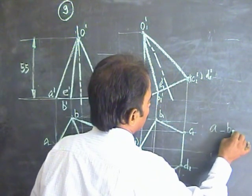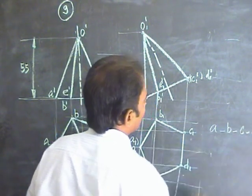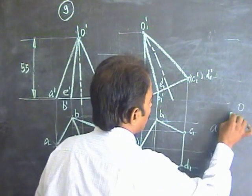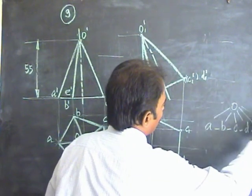Again, follow the joining order. This is A to B, B to C, C to D, D to E, E to A. Then, O is common. OA, OB, OC, OD, OE, OA.